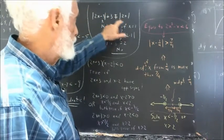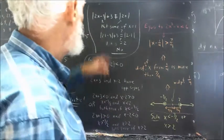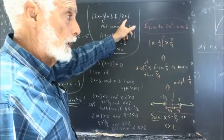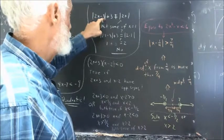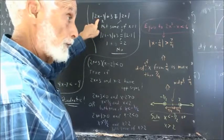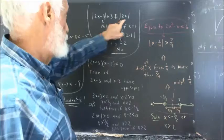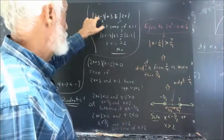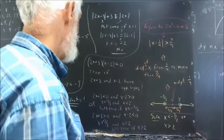But that is absolutely not the case. For example, if x equals 1, the value of 2x is 2. The value of absolute value of 2x minus 3 is the absolute value of negative 1, which is 1. Adding 1 and 3 gives 4. So when x equals 1, absolute value of 2x minus 3 plus 3 is not equal to the absolute value of 2x.